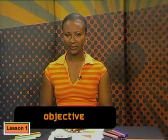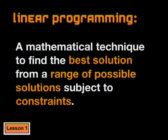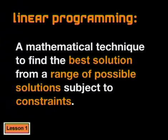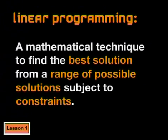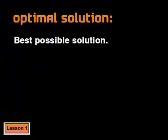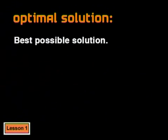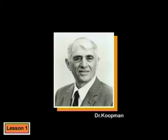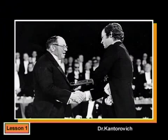The two scenarios we've looked at both involved people making choices to achieve a desired outcome or objective, with their choices influenced by certain requirements or constraints. In our daily lives we tend to solve these problems using common sense. Linear programming is a branch of mathematics that can help with this kind of decision making — we use a mathematical method to find the best solution from a range of possible solutions, subject to certain constraints. The best possible solution given the constraints is called the optimal solution.